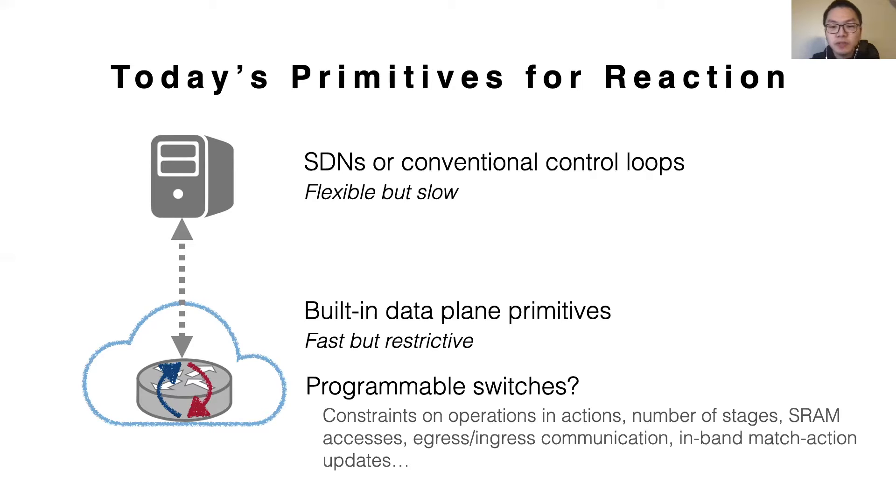Over the years, previous work has come up with several workarounds, but these workarounds have drawbacks. For example, one could leverage recirculation to achieve Turing completeness, but it could significantly degrade the usable throughput of the switch. In the end, these workarounds are non-trivial to design and often consume extensive switch resources even if they are possible.